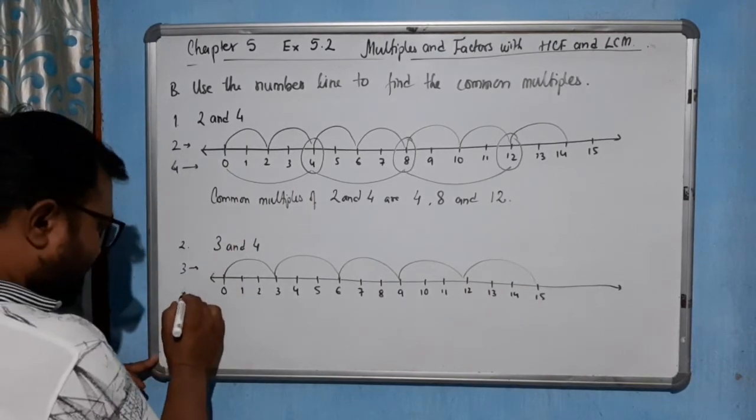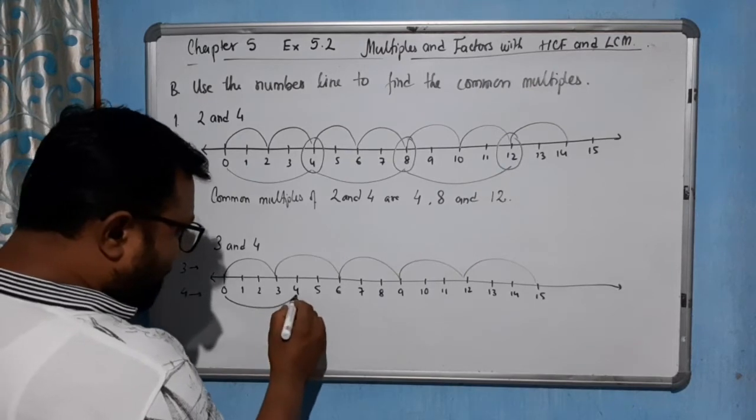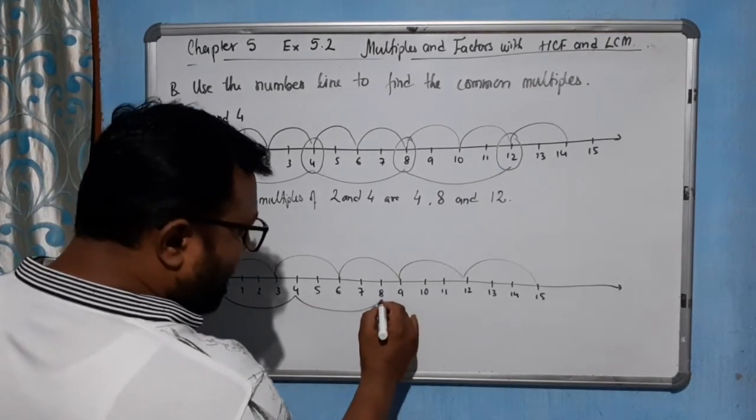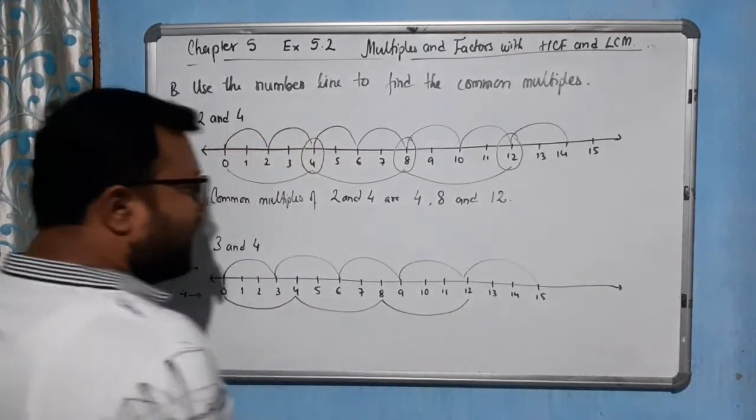Now, for 4, for lower part, 4×1=4, 4×2=8, 4×3=12, and 4×4=16, so this is not here.